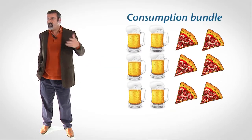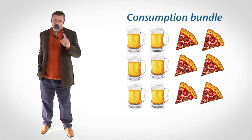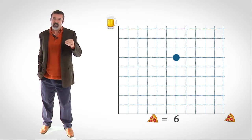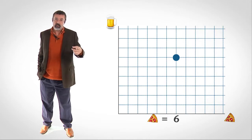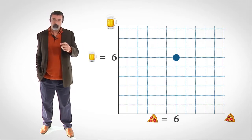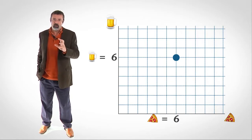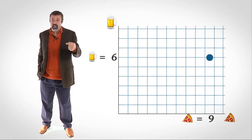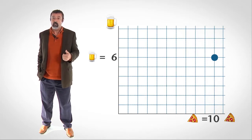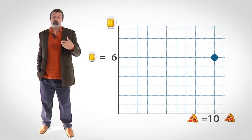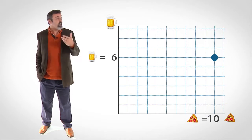There are an infinite number of consumption bundles among which you are indifferent. Suppose you're offered a consumption bundle comprised of six beers and six slices of pizza. We can represent that bundle on a graph by a point that's six units along the pizza axis and six units along the beer axis. Assuming that more pizza is better than less pizza, if we hold the amount of beer constant at six but increase the slices of pizza to ten, you're definitely better off — six beers and ten slices of pizza give you more utility than six beers and six slices.